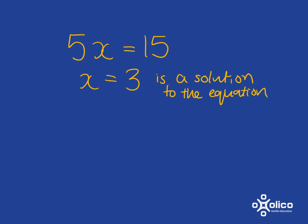We say that it is a solution to the equation because when we put x equal to 3 into the equation, it makes the equation true. If we put x equal to 3 in here, we get 5 times 3 which is equal to 15. So x equal to 3 is a solution to the equation.